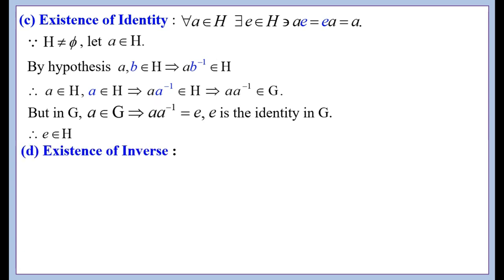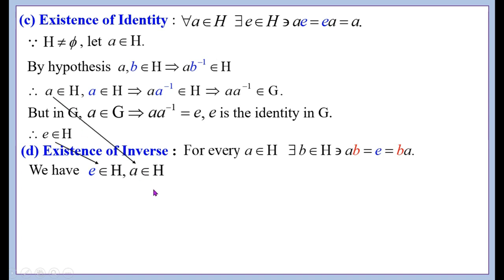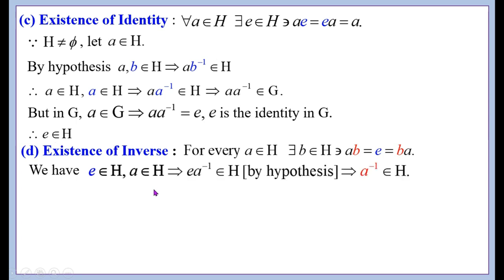Now, existence of inverse: for every a ∈ H there exists b ∈ H such that ab = e = ba, where b is the inverse of a. We have e ∈ H and a ∈ H — in the previous step we showed e is an element of H, and a is already taken as an arbitrary element in H.